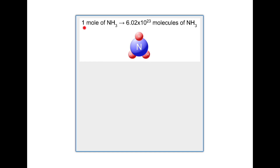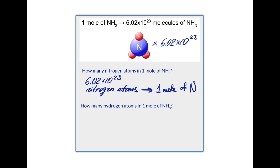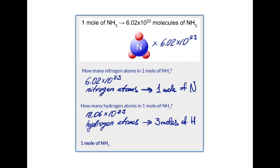One mole of ammonia is made of 6.02 × 10²³ molecules of NH₃ — it is the NH₃ molecule repeated that many times. If we count all nitrogen atoms in 1 mole of ammonia, we find 6.02 × 10²³ nitrogen atoms, which is 1 mole of nitrogen. If we count all hydrogen atoms in 1 mole of ammonia, we find 18.06 × 10²³ hydrogen atoms, which is 3 moles of hydrogen atoms. So 1 mole of ammonia is made of 1 mole of nitrogen atoms and 3 moles of hydrogen atoms.